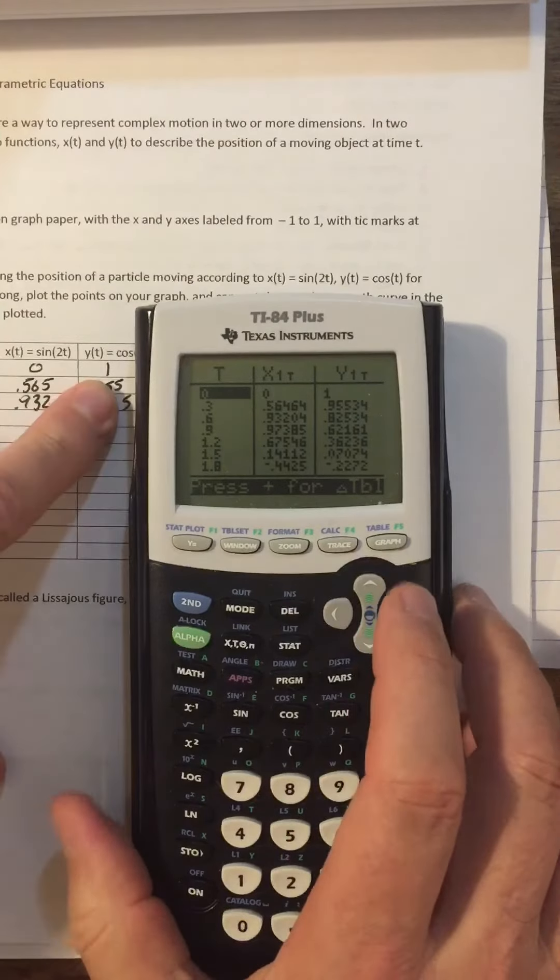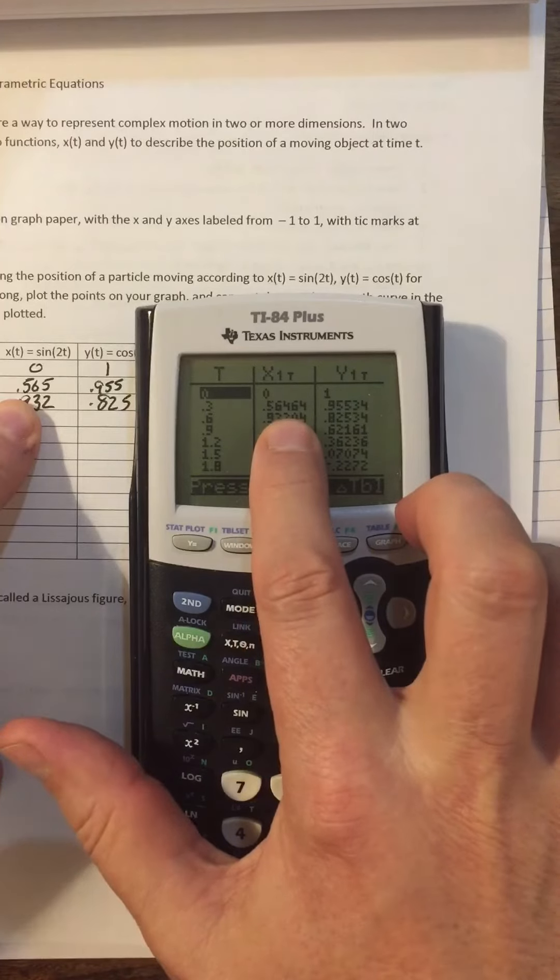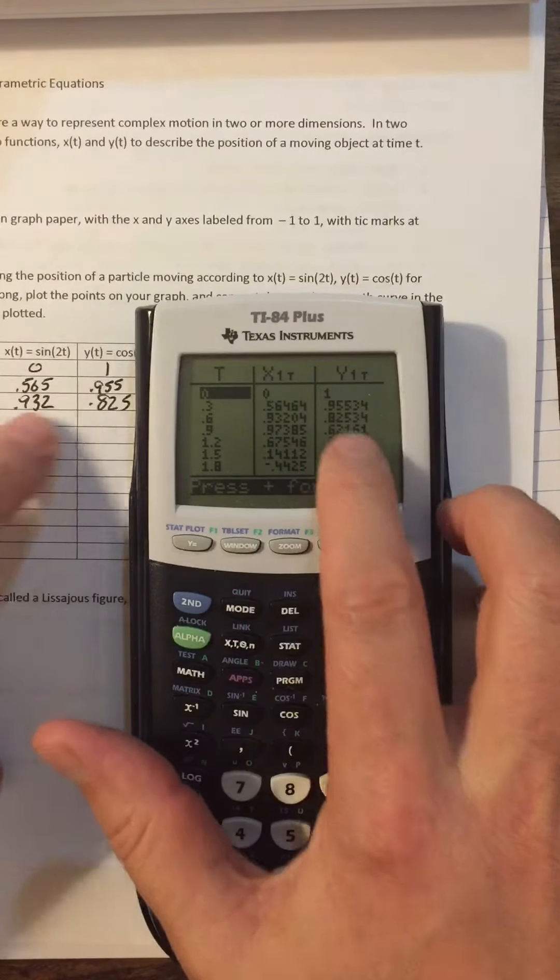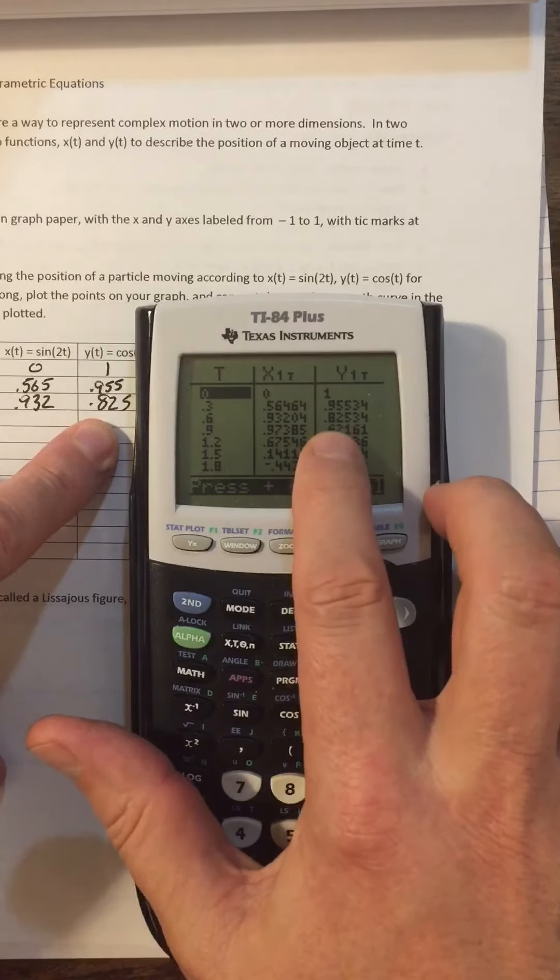So here's zero, zero, one. Here's 0.3, 0.565, 0.955. Then 0.6, 0.932, 0.825.